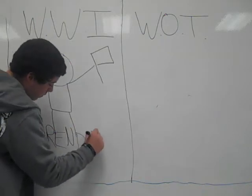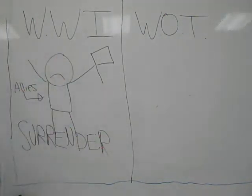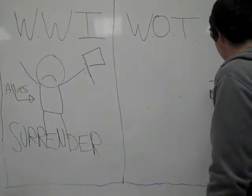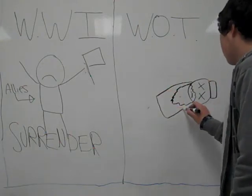The differences between the Treaty of Versailles and the War on Terror are that the Allies surrendered after suffering a sufficient amount of casualties. However, when Osama bin Laden was confronted by Navy SEALs, he was killed instead of surrendering.